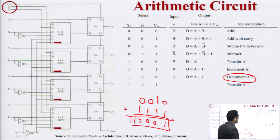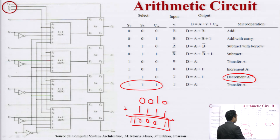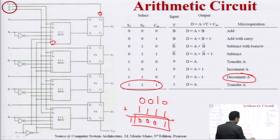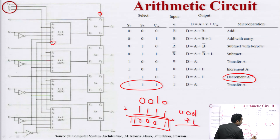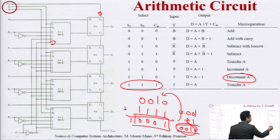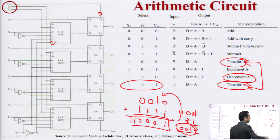The last micro operation is when all selection bits are 1 and carry-in is also 1. The MUX selects line 3, giving all 1s, and with carry-in 1, the addition wraps around to give back the original number A. So this is also performing a TRANSFER A operation. Two of the eight operations thus perform the same transfer function.